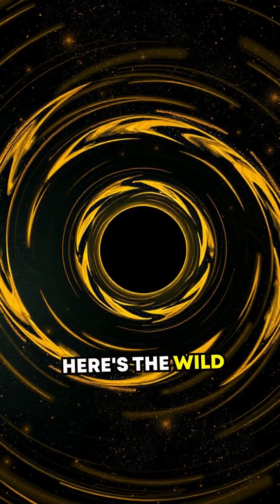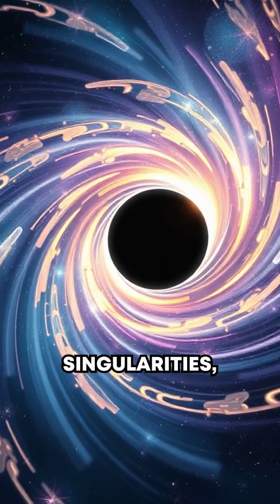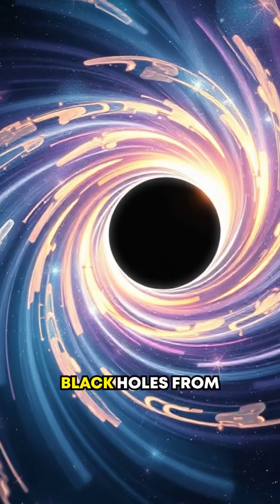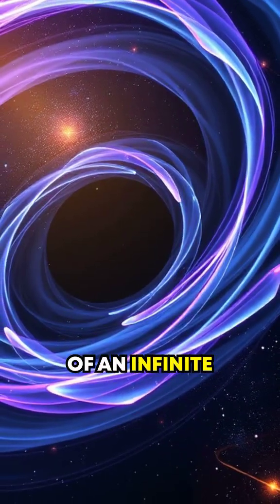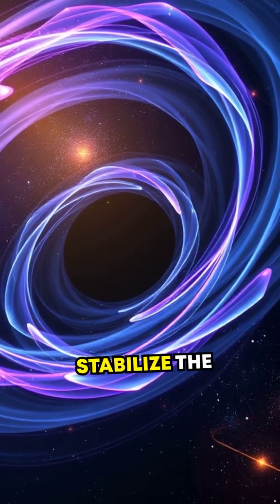Now, here's the wild part. In extreme cases, torsion might prevent singularities, like the ones we associate with black holes, from forming. Instead of an infinite collapse, the intense spin could theoretically stabilize the core.